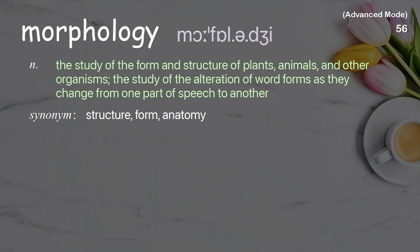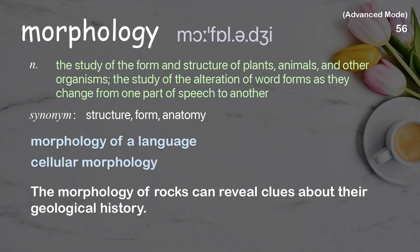Morphology: The study of the form and structure of plants, animals, and other organisms; also the study of the alteration of word forms as they change from one part of speech to another. Examples: morphology of a language, cellular morphology. The morphology of rocks can reveal clues about their geological history.